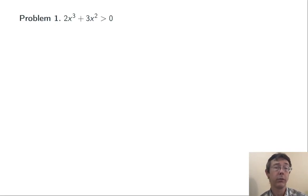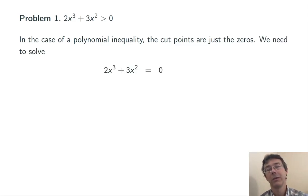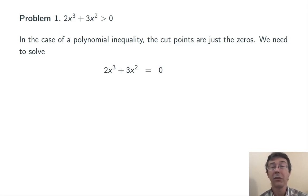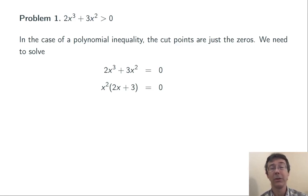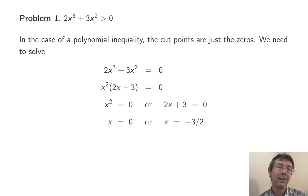Let's see what I mean by working through this first problem. 2x cubed plus 3x squared is greater than zero. This is a polynomial — there's no denominator, so the cut points are just going to be the zeros. I need to solve this equation. I solve polynomial equations by factoring. Here I've got a common factor of x squared to pull out. This product can only be zero if one of the factors is zero, so I need to solve these two equations. When I do that, I get cut points of zero and negative three halves.